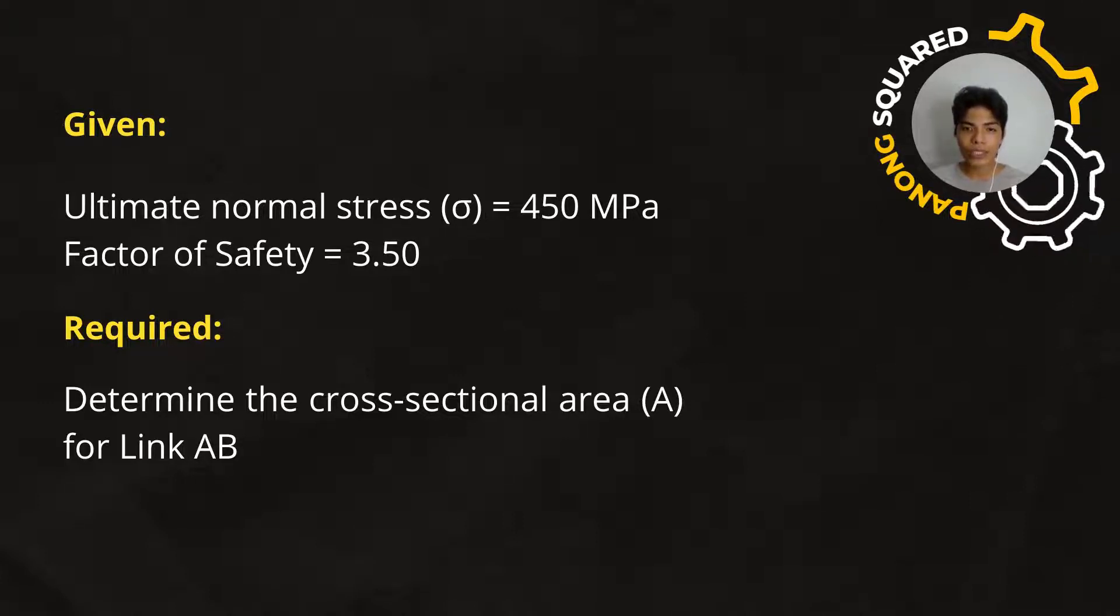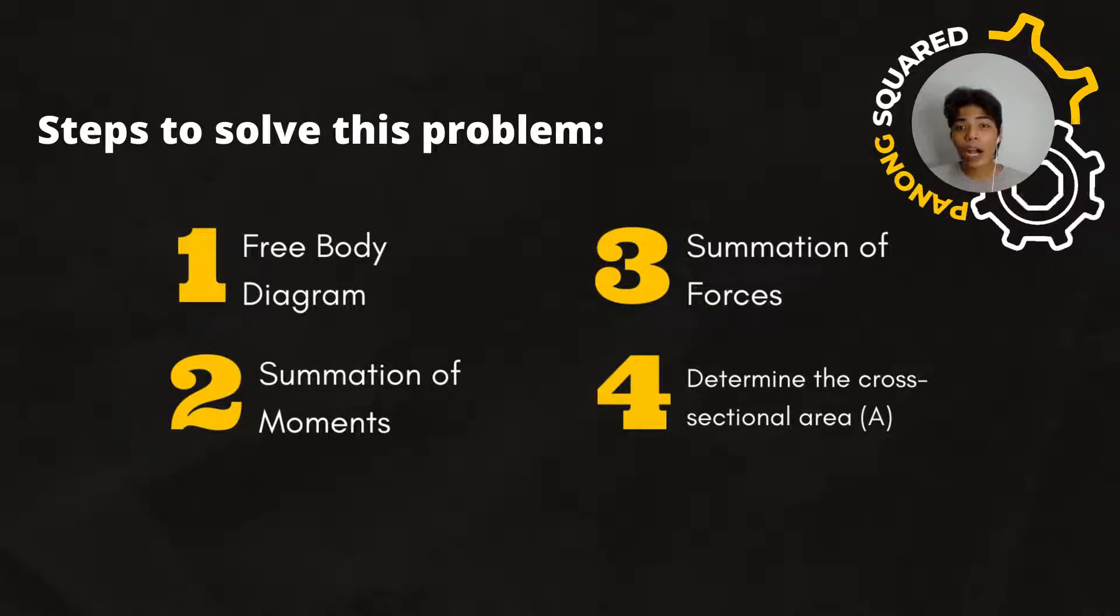Then, we are asked to solve for the cross-sectional area for the link AB. Now, how do we solve this?